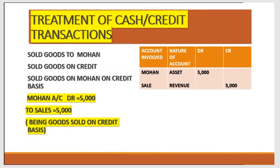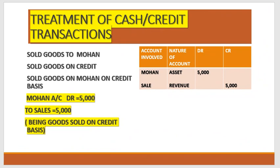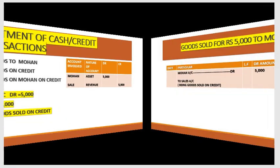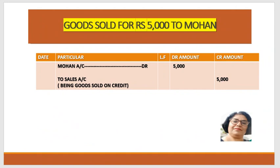इसी तरह जब उधारी की transaction है: 'sold goods to Mohan', 'sold goods on credit', 'sold goods to Mohan on credit basis' — जहाँ पे party का नाम नहीं दिया हुआ, तो वहाँ पे party account debit to sales account करते हैं। जब उधार में sale होती है तो party को debit करते हैं और sale को credit करते हैं। Mohan हमारे लिए asset है क्योंकि हमने उससे पैसे लेने हैं, तो हमारा asset increase हो गया, तो उसको debit करना है। Sale हमारा revenue है जो increase हो गया, तो उसको credit करना है। Journal entry: Mohan account Dr. to Sales account — Mohan के आगे 5,000 debit, sales के आगे 5,000 credit। Narration: 'Being goods sold on credit basis.'